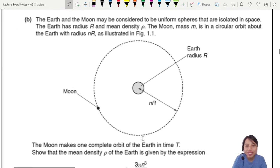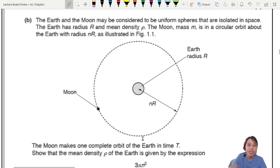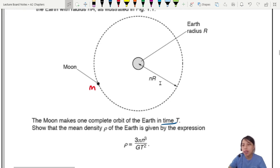So now we go to the scenario here. Very interesting. What is this? Earth and the moon. So we have Earth and our nice moon that goes round and round. Uniform spheres isolated in space. Isolated means no other forces. So Earth has radius, mean density. Moon has mass m. Where's our moon? Here, m. And it goes around in a circular orbit at a radius n times r. The moon makes one complete orbit in time t. Show that the density of the Earth is given by this expression. It has to show and show. You have to know the first sentence you need to ask yourself is, who provides centripetal force? Like what we answered just now.